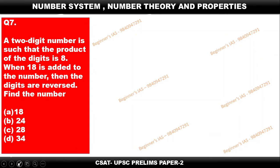Hello everyone, welcome you all. Let us discuss a number system based question. A two-digit number is such that the product of the digits is 8. When 18 is added to that number, then the digits are reversed. Find that number.